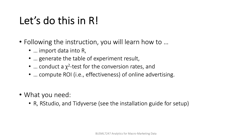Now it's your turn. There is a step-by-step instruction for analysis in R with the actual data. Following the instruction, you will learn how to import the data into R, generate the table of experiment results, conduct a chi-square test for the conversion rates, and compute the ROI of online advertising. If you have not yet installed the software and package, you need to install them first before doing this lab. There is an instruction guide for setup in the course introduction page. Alright, have fun!